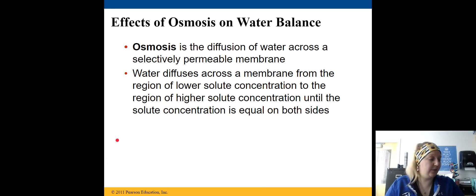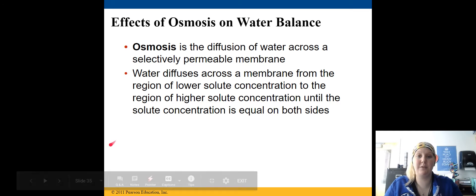Osmosis is the diffusion of water across a membrane in the same exact way, except water uses that aquaporin to move itself across the membrane. Water will diffuse across the membrane from an area of low solute concentration, or high water concentration, to an area of lower water concentration, or higher solute concentration, until the solute concentration is equal on both sides. This makes more sense with a visual.